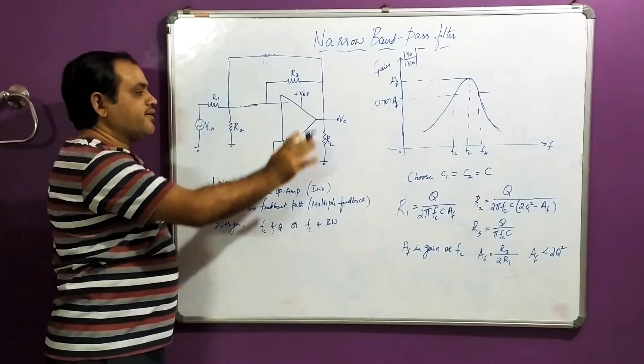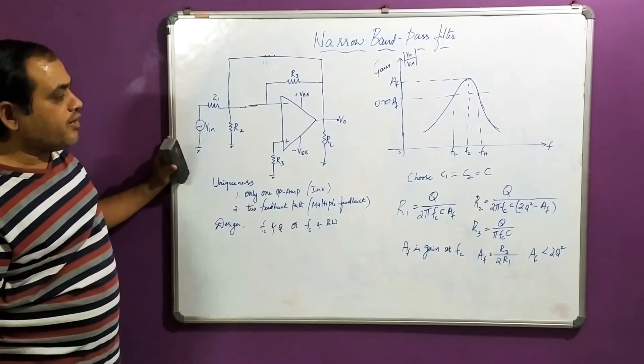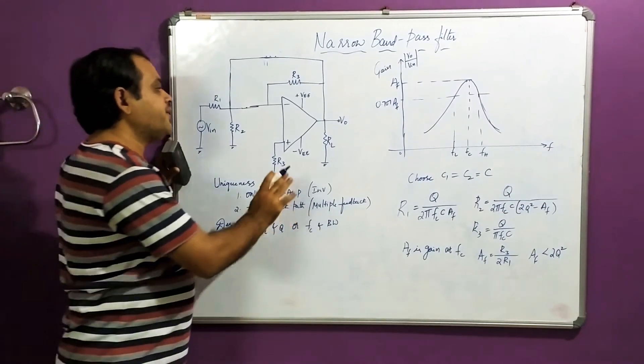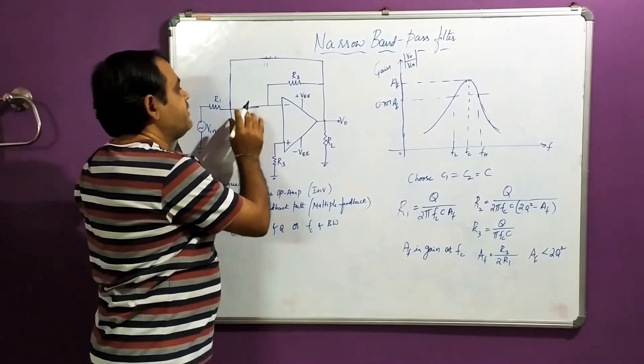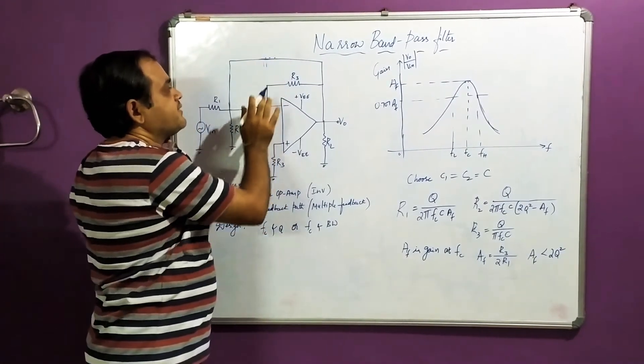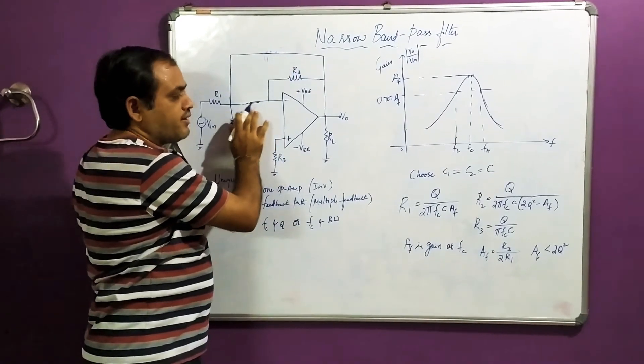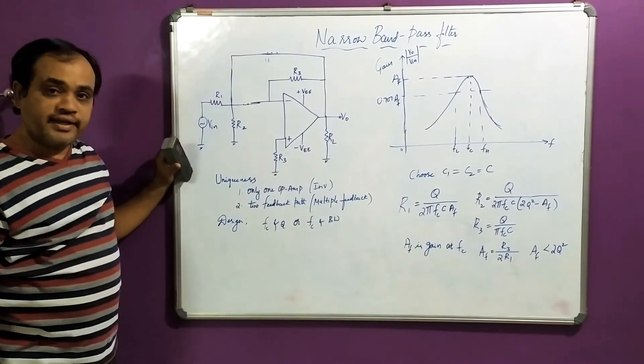This is, in general, a simple explanation about narrow band pass filter. Other than that, the operation is dependent on these two capacitor effects. One is connected in the feedback path, another is connected at the input side.